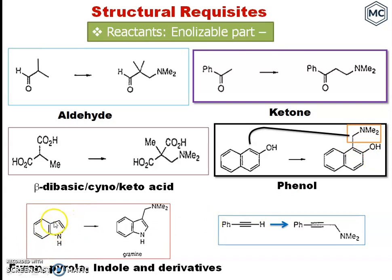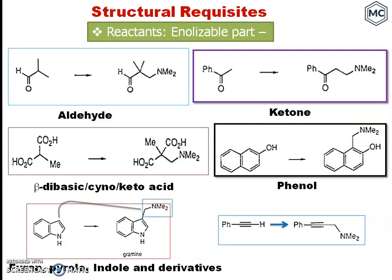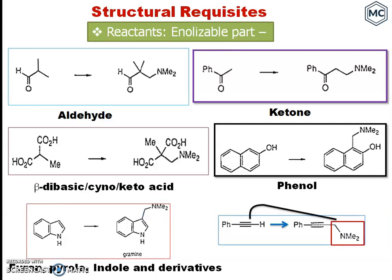Next, heterocyclic compounds like furan, pyrrole, indole, and their derivatives. If we consider indole: indole reacts with the iminium salt to form the well-known compound gramine. Here, this carbon is nucleophilic because the lone pair pushes electron density to this position. It can form a bond with the iminium salt, and the product is formed. Also, phenylacetylene can react with the iminium salt to form a product. So we have considered various types of ionizable substrates.